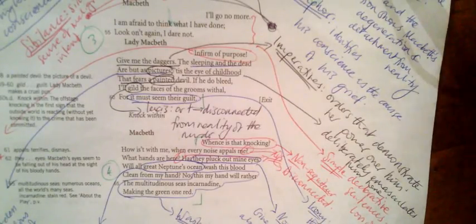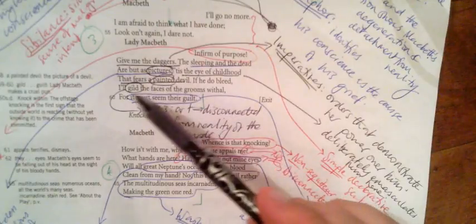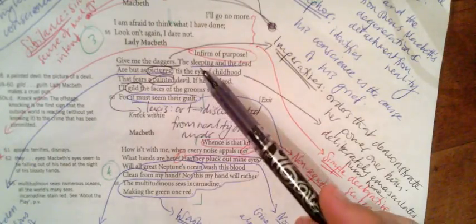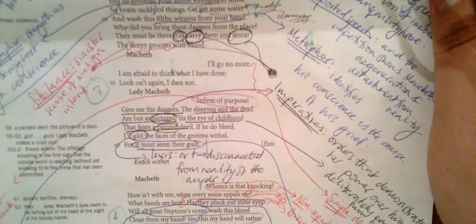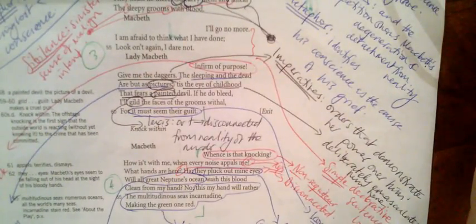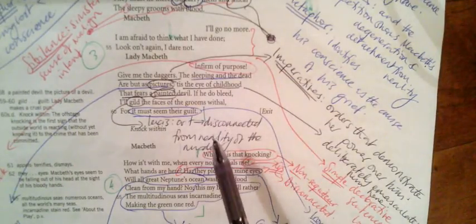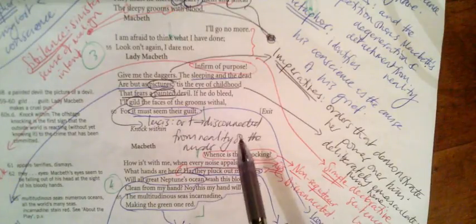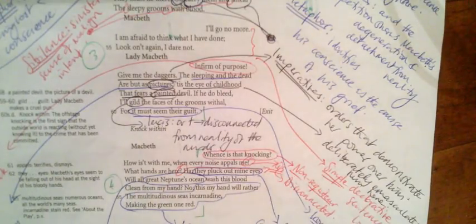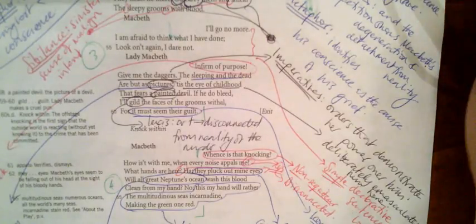'If he do bleed, I'll gild the faces of the grooms withal, for it must seem their guilt.' What we see here—pictures, painted, gild, seemliness—this lexis of art shows the way she's disconnected from the reality of the murder. She sees it as some kind of weirdly creative act by creating this crime scene.